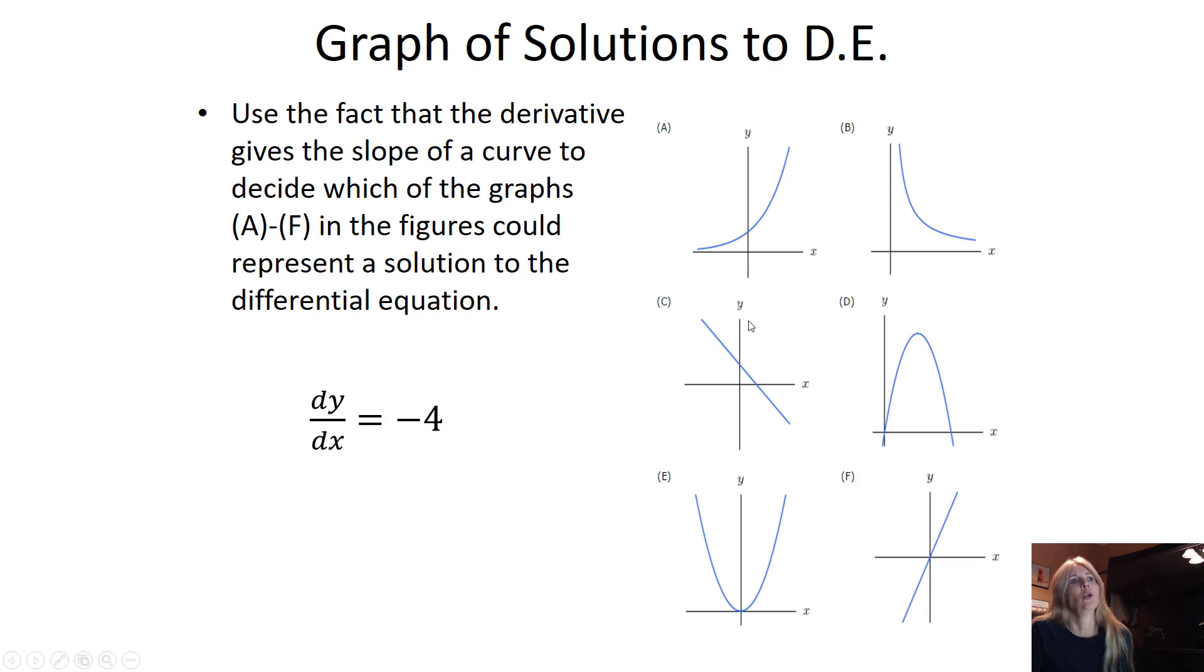You can also look at graphs to differential equations. So remember that this is a rate. So if I'm looking at this as a derivative, and I'm not seeing a function here, then I know that this is just simply a rate that my function is decreasing. And that's where I get negative 4. That's my slope.